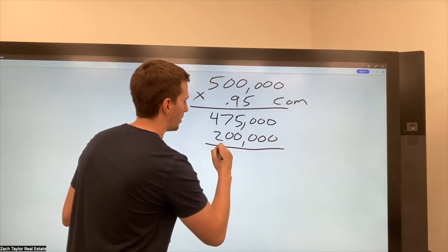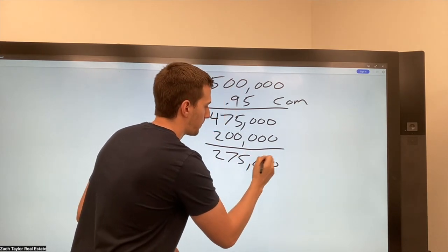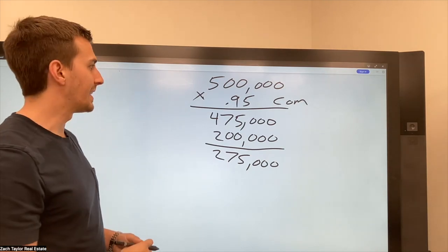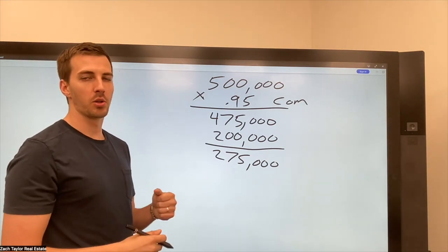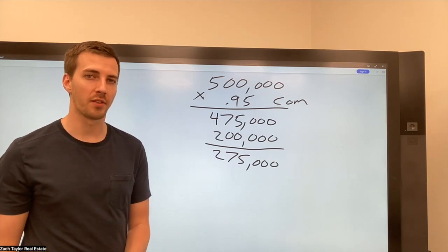So let's say in this example, they owe 200,000. So now I'm down to 275 for the seller, but there's one more expense and that's going to be closing costs. So a lot of times we're going to be working with a title company and they're going to have their own set of costs.